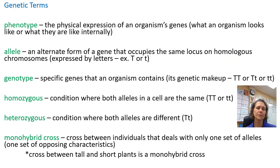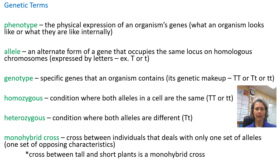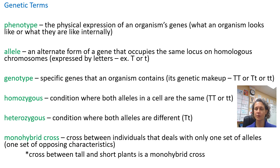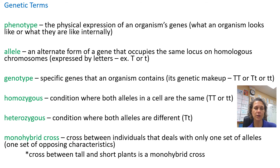Now some terms to know, because knowing these will make doing Punnett squares a lot easier. Phenotype is the actual physical expression of an organism's genes — basically what the organism looks like. An allele is just the alternate form — the letters capital T and little t are the alleles. Genotype is the genetic makeup, like capital T, capital T — what we use in our Punnett squares. Homozygous means both alleles are the same — both big T or both little t. Heterozygous means you have a mix — one big, one small. All simple Punnett squares are monohybrid crosses, meaning we're only dealing with one set of traits.